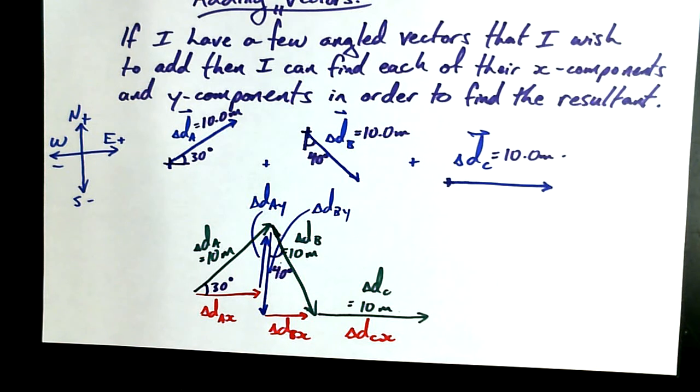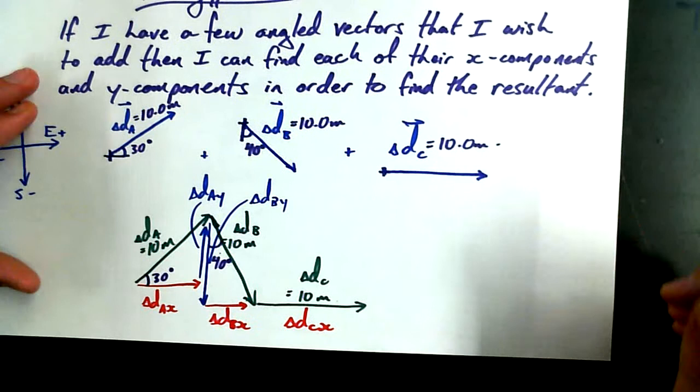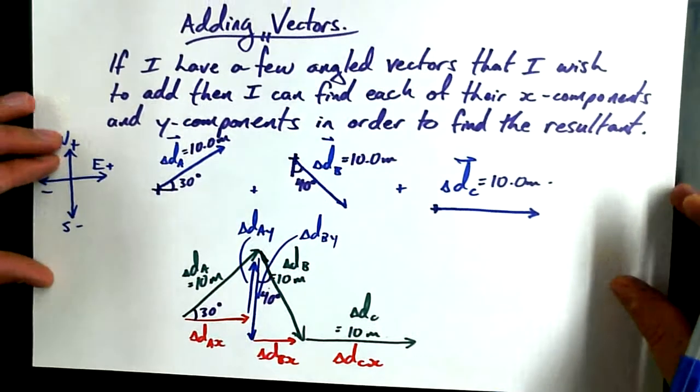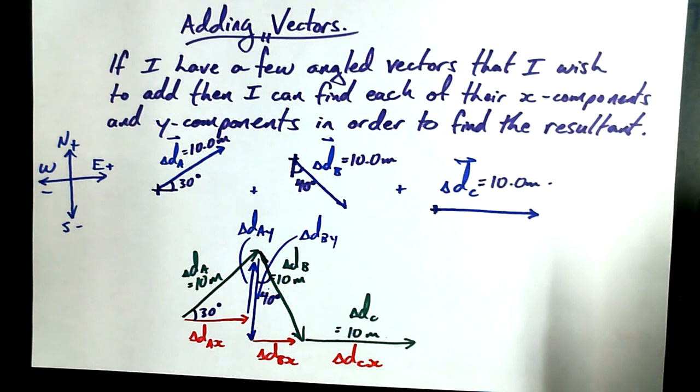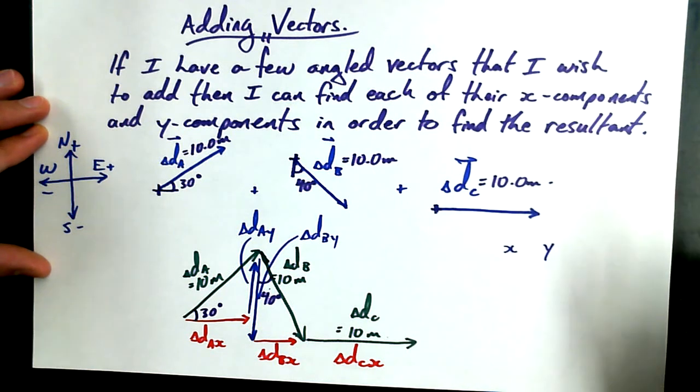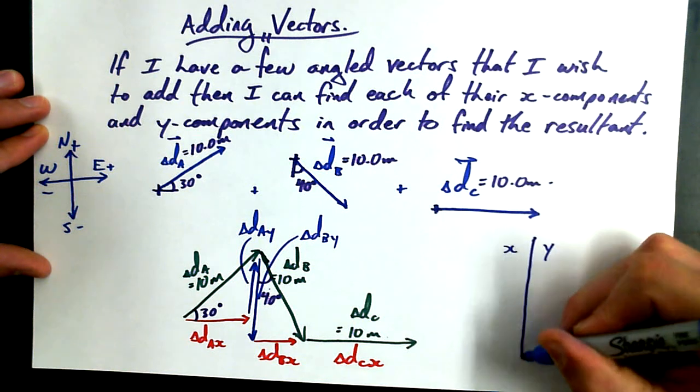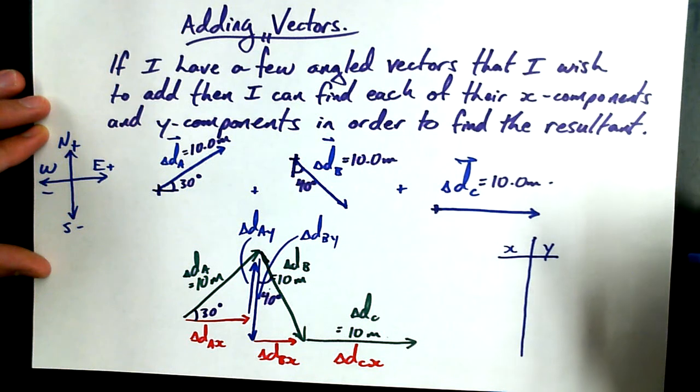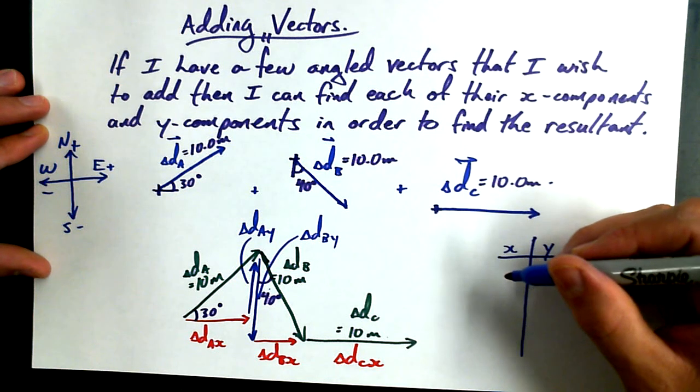And I'd like to start off with an organizational system as well. So my organizational system that I would recommend, and you don't have to do this. You don't have to do anything, really. I'm just saying if you're somebody that has a hard time organizing yourself, this may be useful for you. You're always going to have x and y components for every angled vector. So I'd recommend that you start off with a t-chart that has x and y values. Because you're going to find the x and y component of each of these vectors. And then you're going to have vectors A, B, and C.